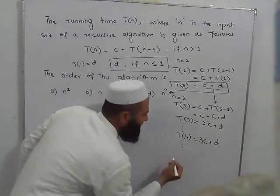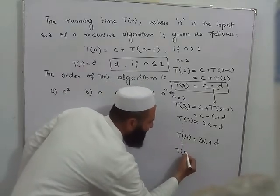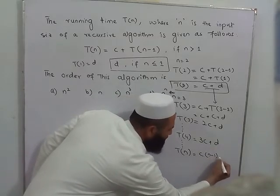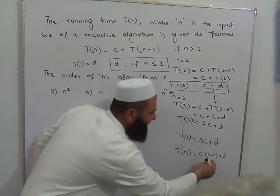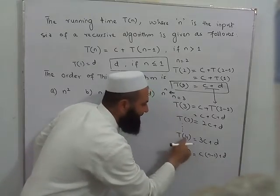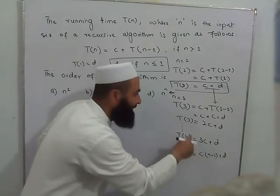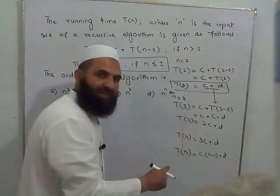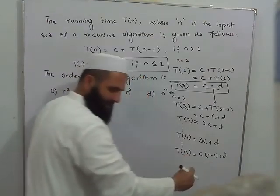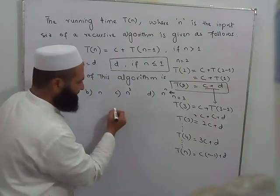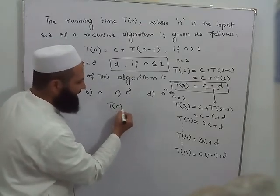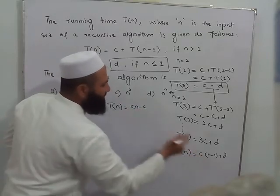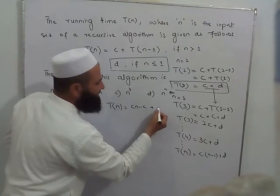Agar hum isko continue karein aur n ho to n ke liye T of n equals c into n minus 1 plus d. Yaini jo input hai usse c ke saath multiply karo: 4 hai to 3c, 3 hai to 2c, n hai to n minus 1 times c. Is mein hum paate hain T of n equal to cn minus c plus d. Is algorithm ka order of growth is n. Thank you very much.